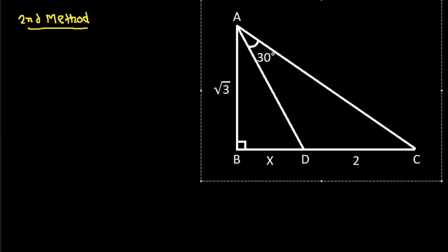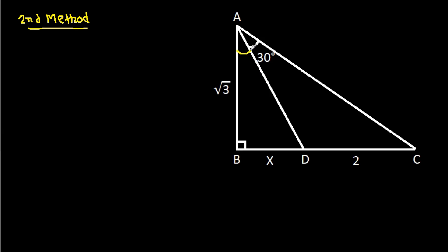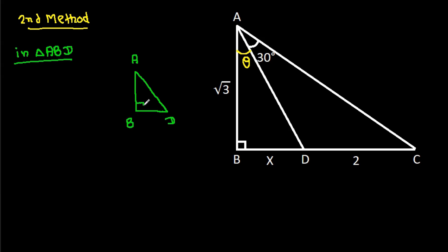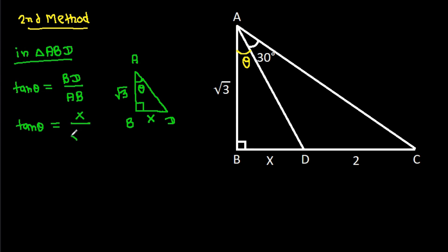For the second method, suppose angle ADB is theta. In triangle ABD, angle B is 90 degrees, angle ADB is theta, BD is x, and AB is root 3. So tan theta equals BD over AB, giving tan theta equals x over root 3.